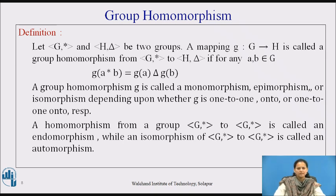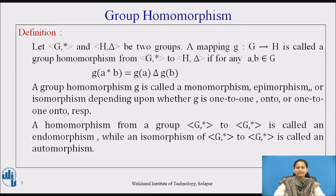A group homomorphism g is called a monomorphism, epimorphism, or isomorphism depending upon whether g, which is a mapping from G to H, is of the type one-to-one, onto, or one-to-one onto, respectively. A homomorphism from a group G, star to itself is called an endomorphism, while an isomorphism of G, star to itself is called an automorphism.